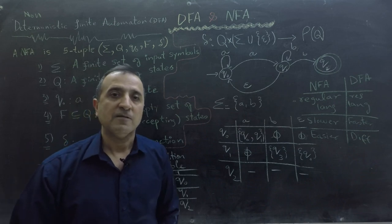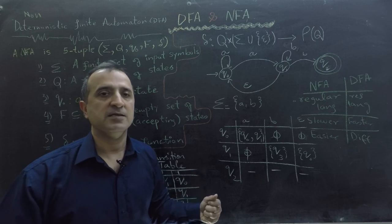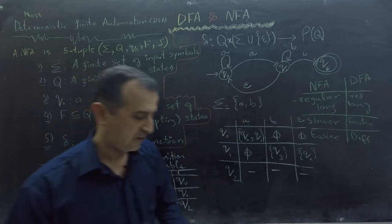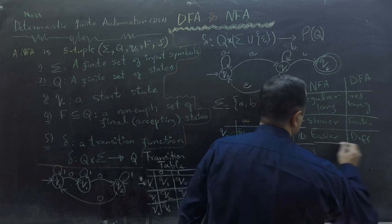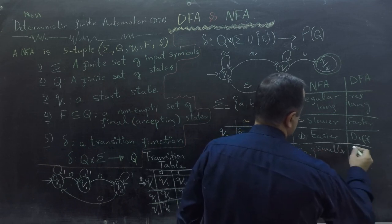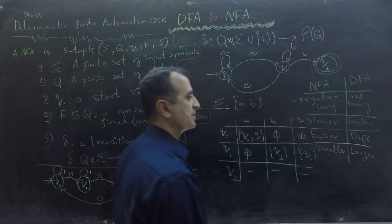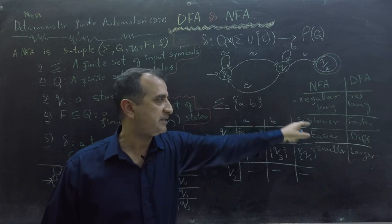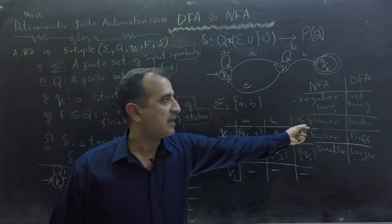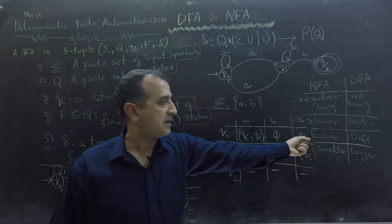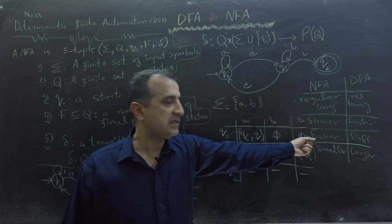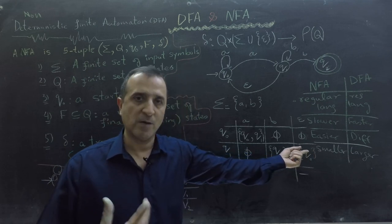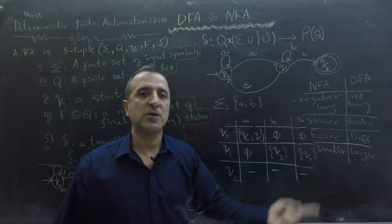Lastly, which has more states and will be larger in size? NFA is exponentially smaller in size as compared to DFA. So NFA is usually smaller and DFA is larger. That's our comparison of NFA and DFA: both have equal power because both accept regular languages, but NFA is slower and DFA is faster. Creating NFA via computer or by ourselves is easier, and NFA is smaller in size in terms of number of states and links. DFA can have exponentially more states.